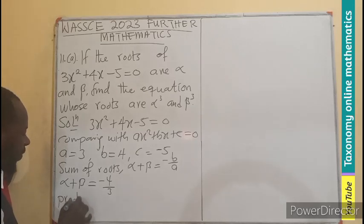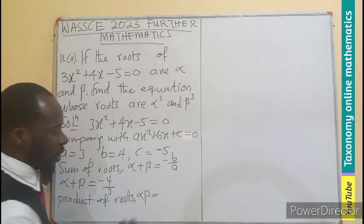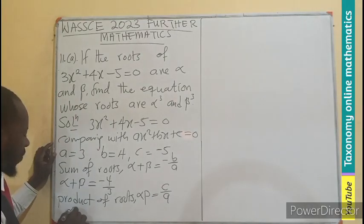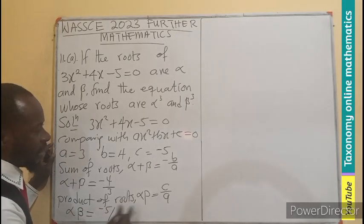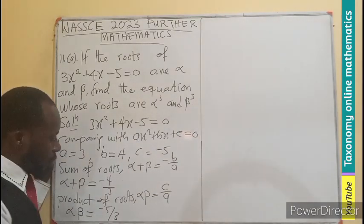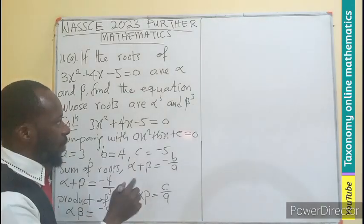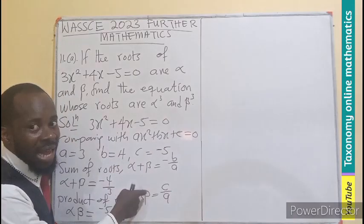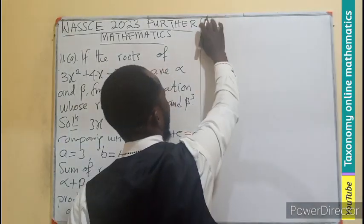Then let's also find the product of root, meaning α × β, which is also given by c/a. So in that case, our α × β will be equal to c, which in this case is -5/a, which is 3. So now we know the sum of the root, we know also the product of the root. This is what was used to generate this very equation.